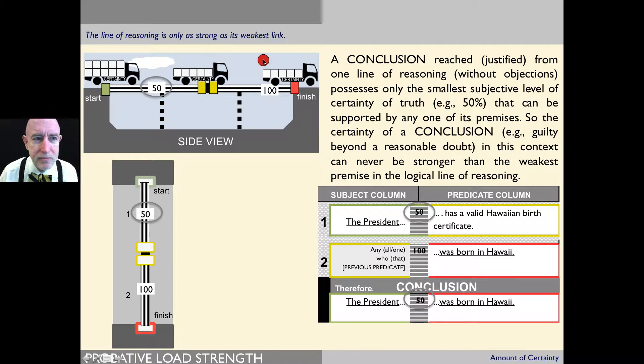In this example, you can see that the first premise is perceived as having 50% likelihood of being true, and the second premise, 100%.